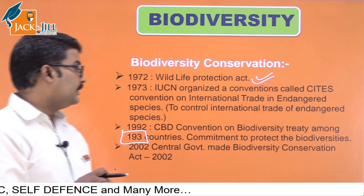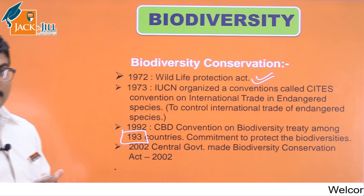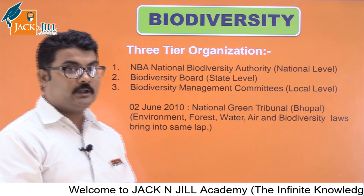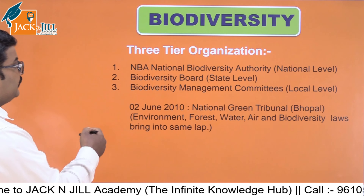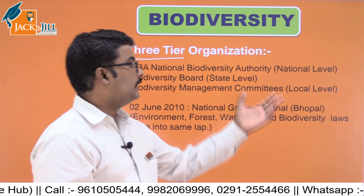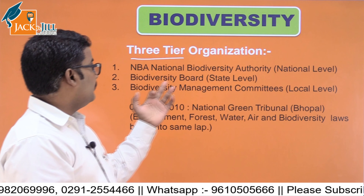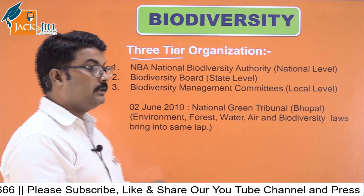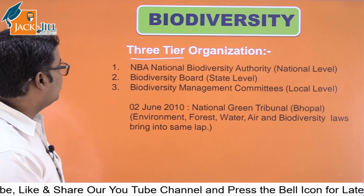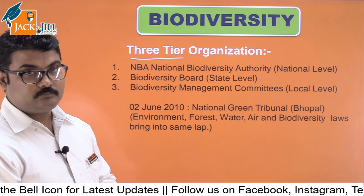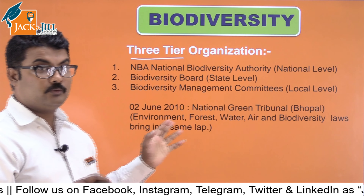In 2002, the central government of India introduced the Biodiversity Conservation Act. India has a three-tier organization at three levels: first is NBA - National Biodiversity Authority - at the national level; next is the State Biodiversity Board at the state level, present in different states of India; and last is the Biodiversity Management Committee at the local level, which environment lovers can also join.